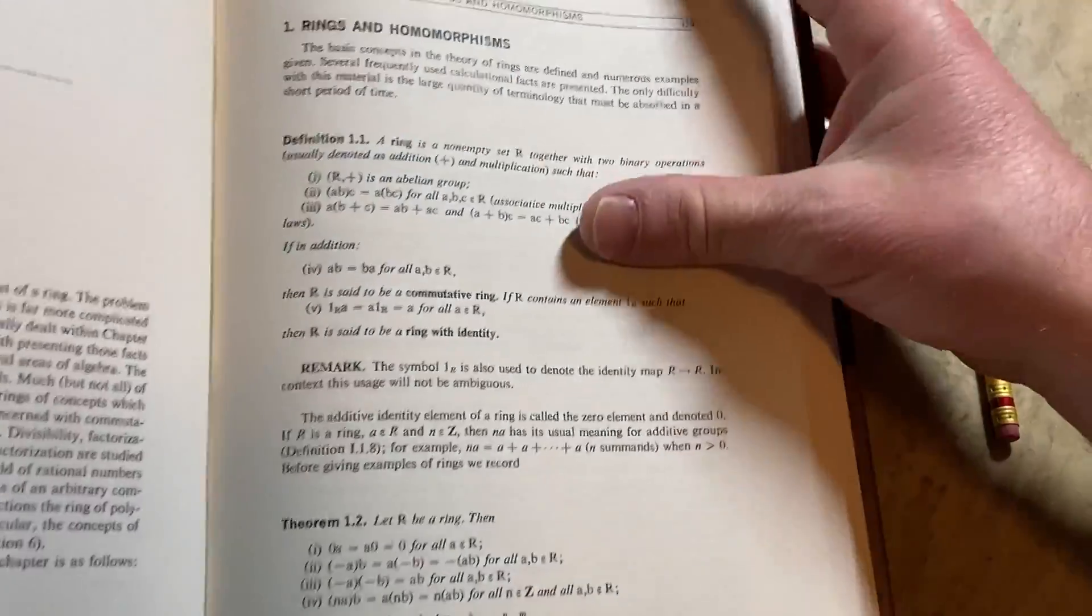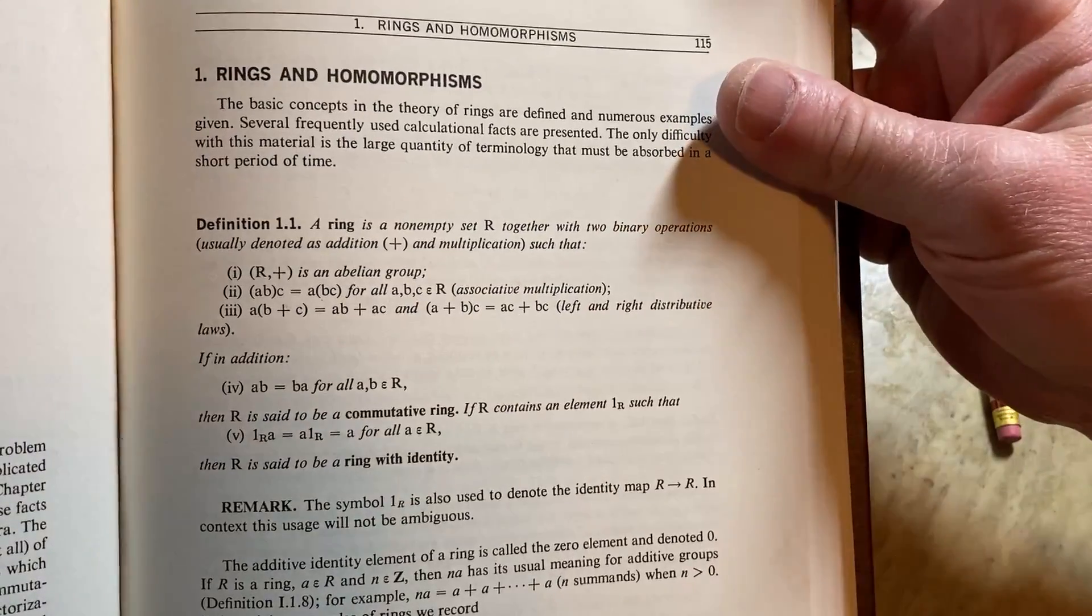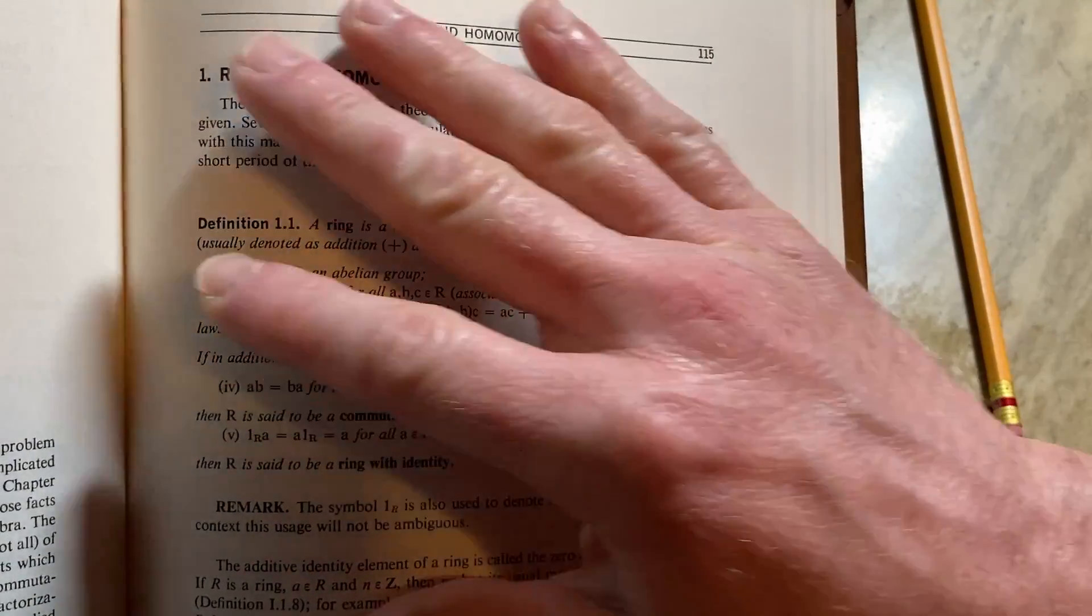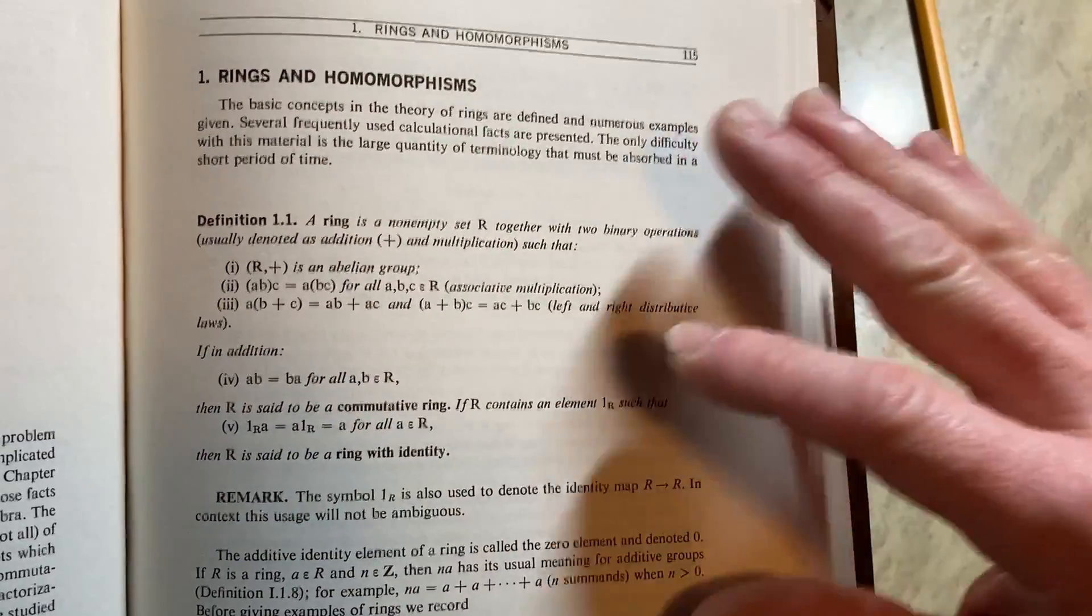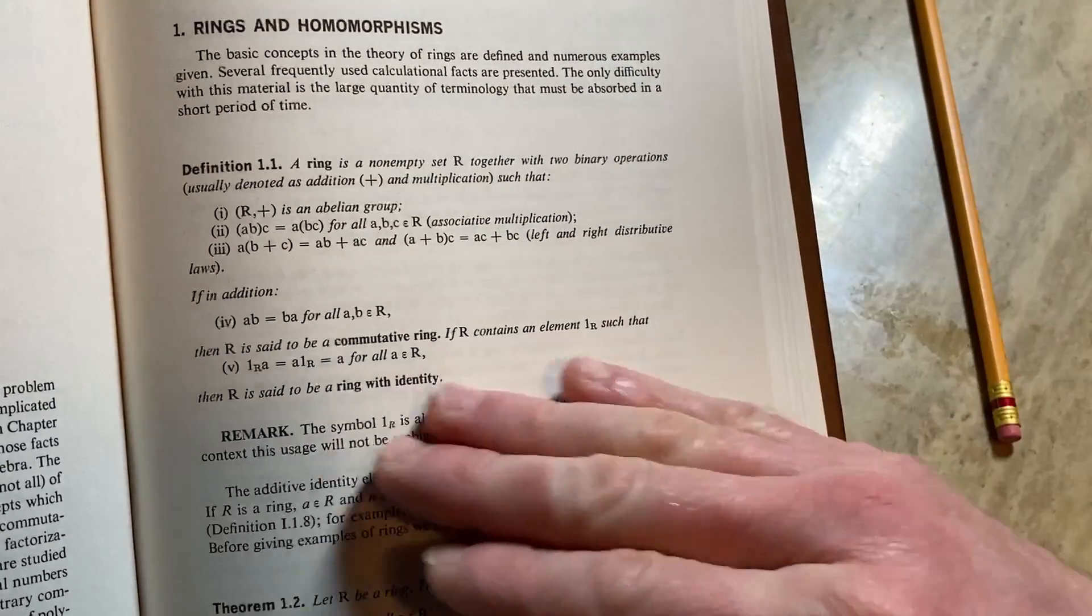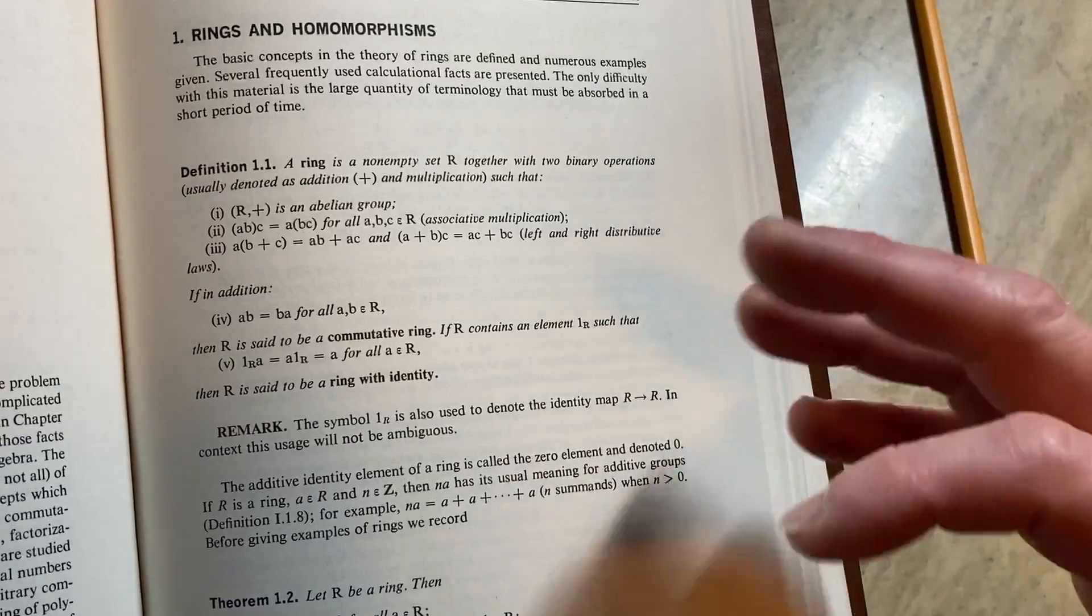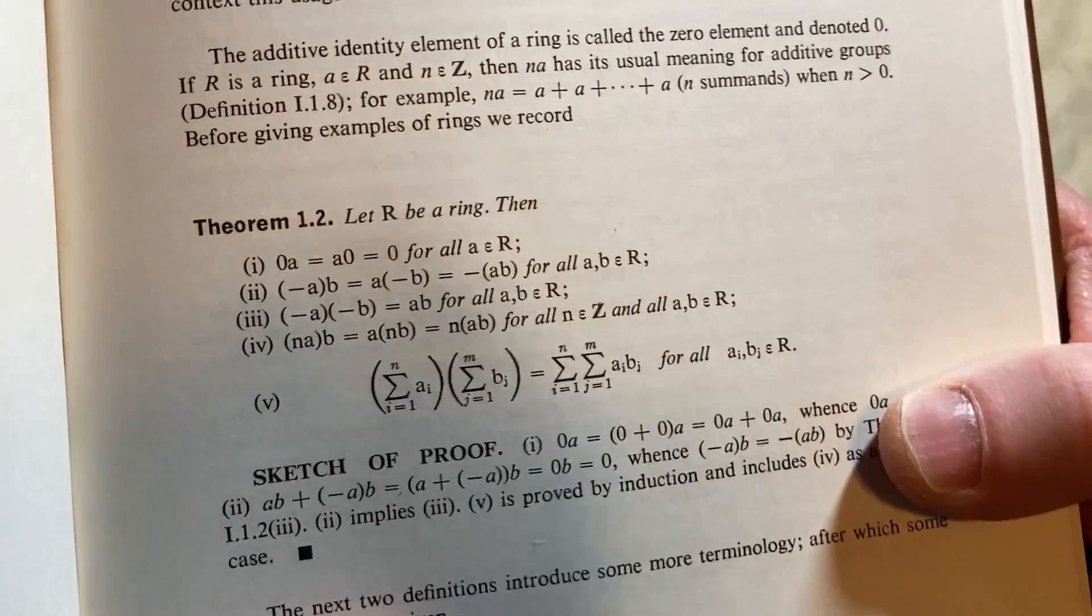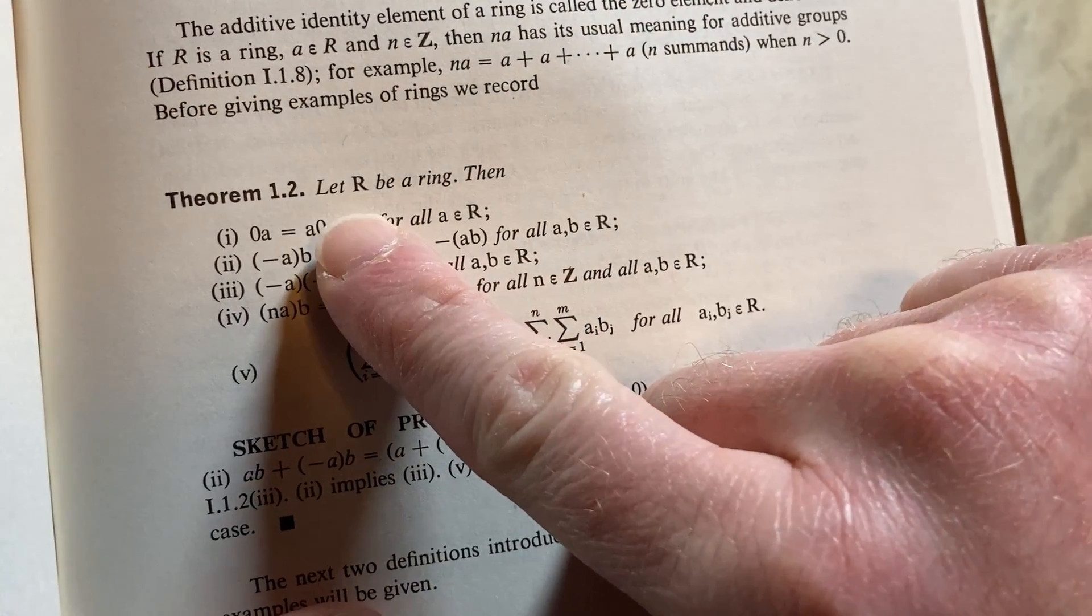So he starts off, this is where the discussion of rings begins, and here we have the definition, some terminology: what is a commutative ring, what is a ring with identity. I talked about that in a previous video, but now we're going to get to some proofs here.